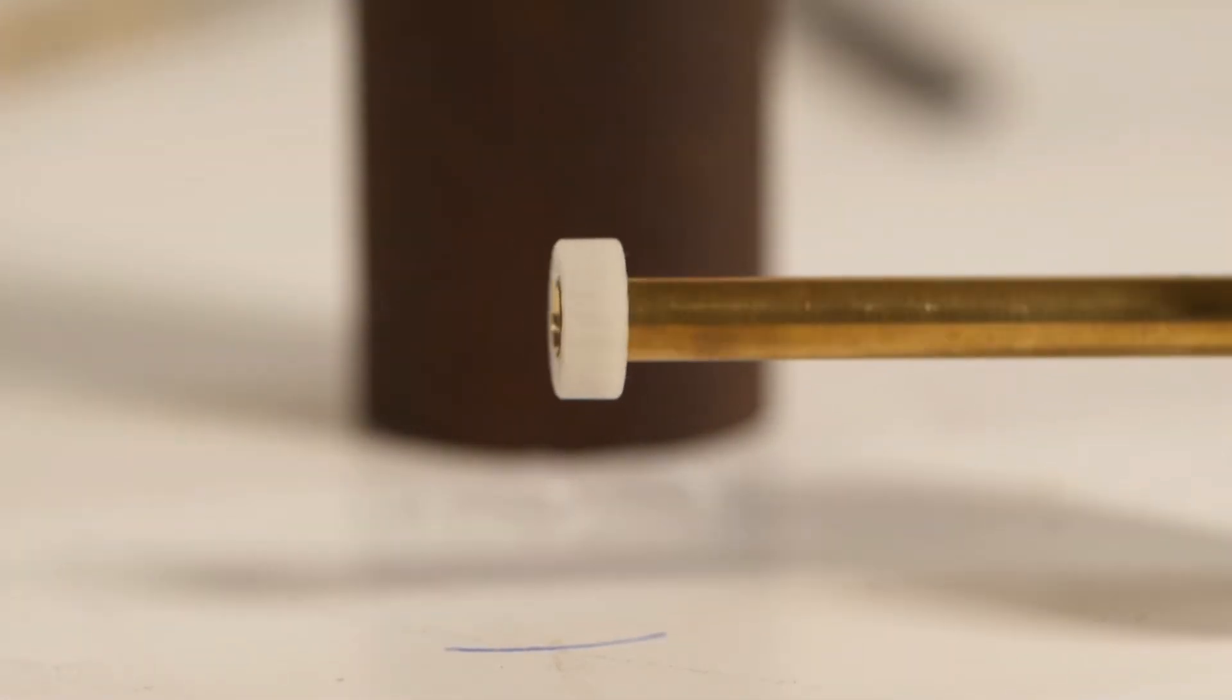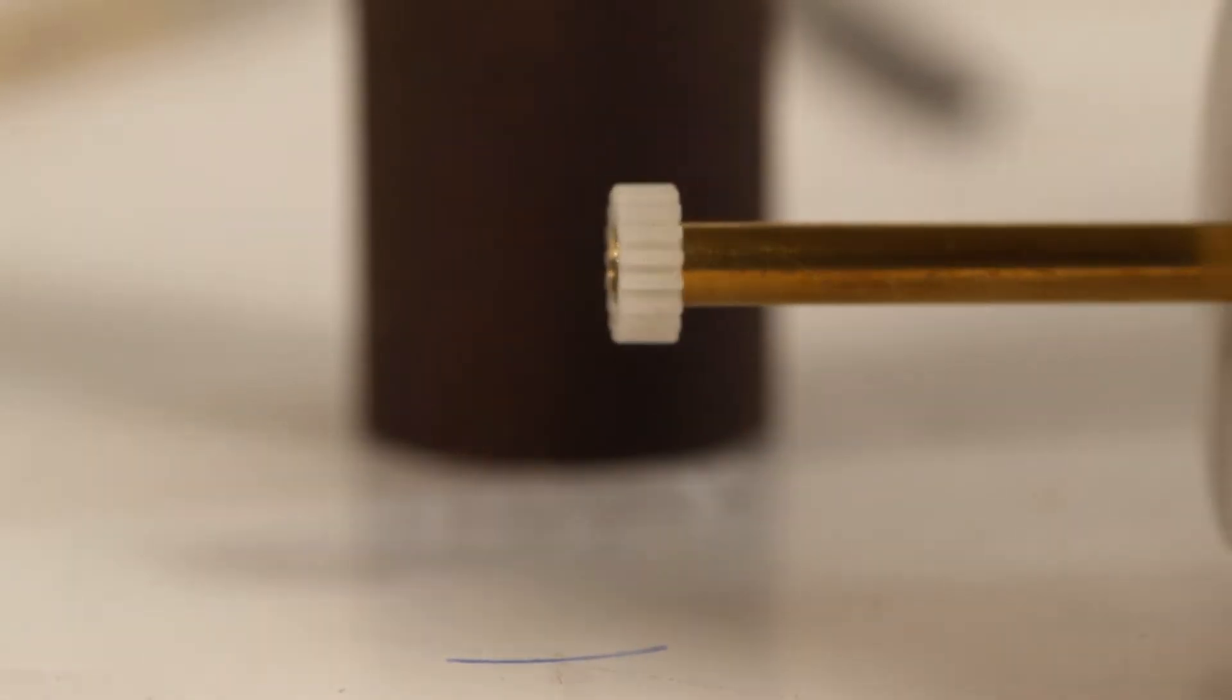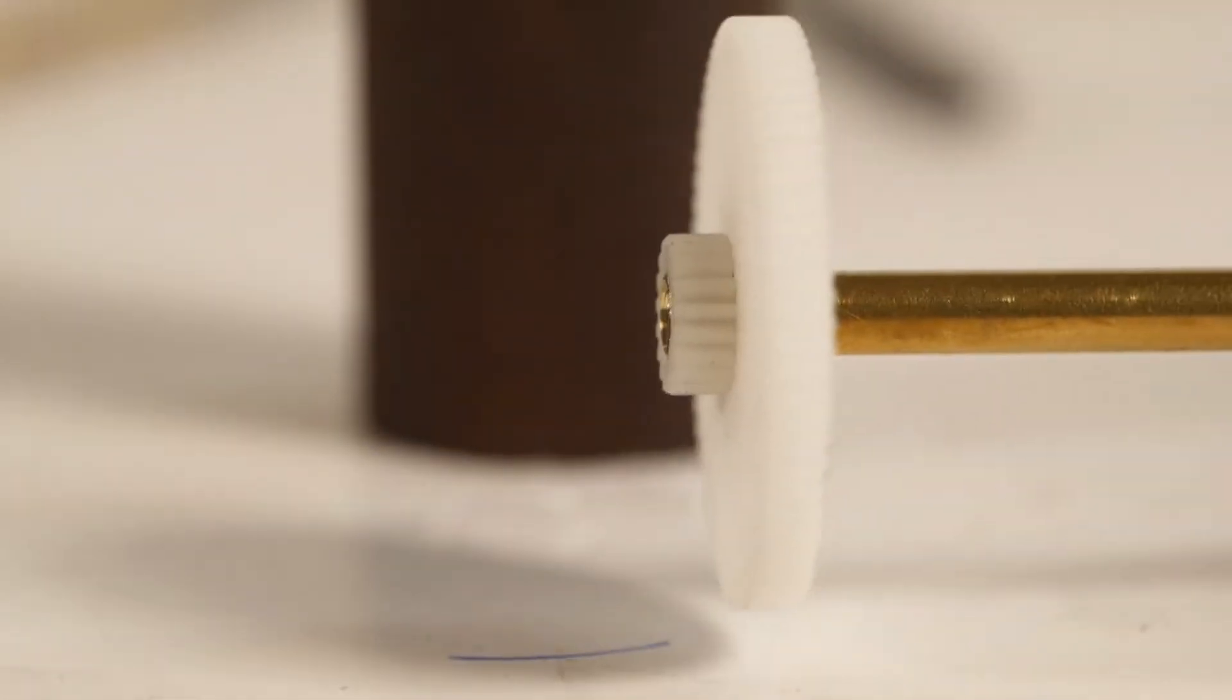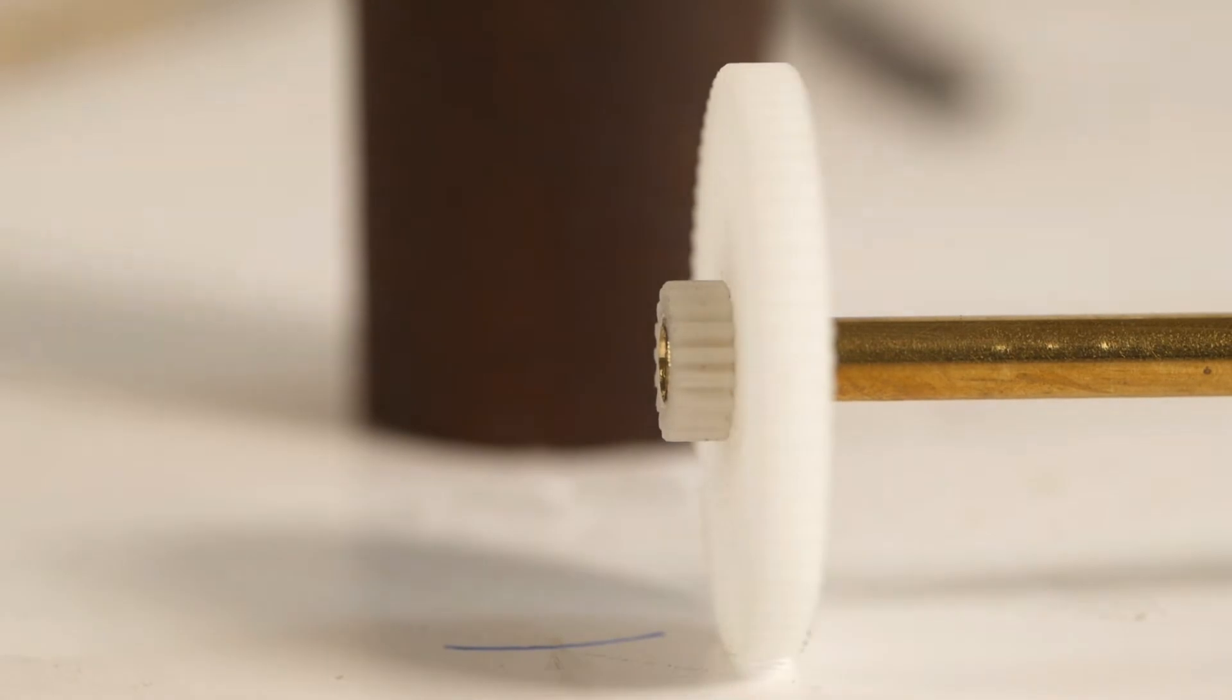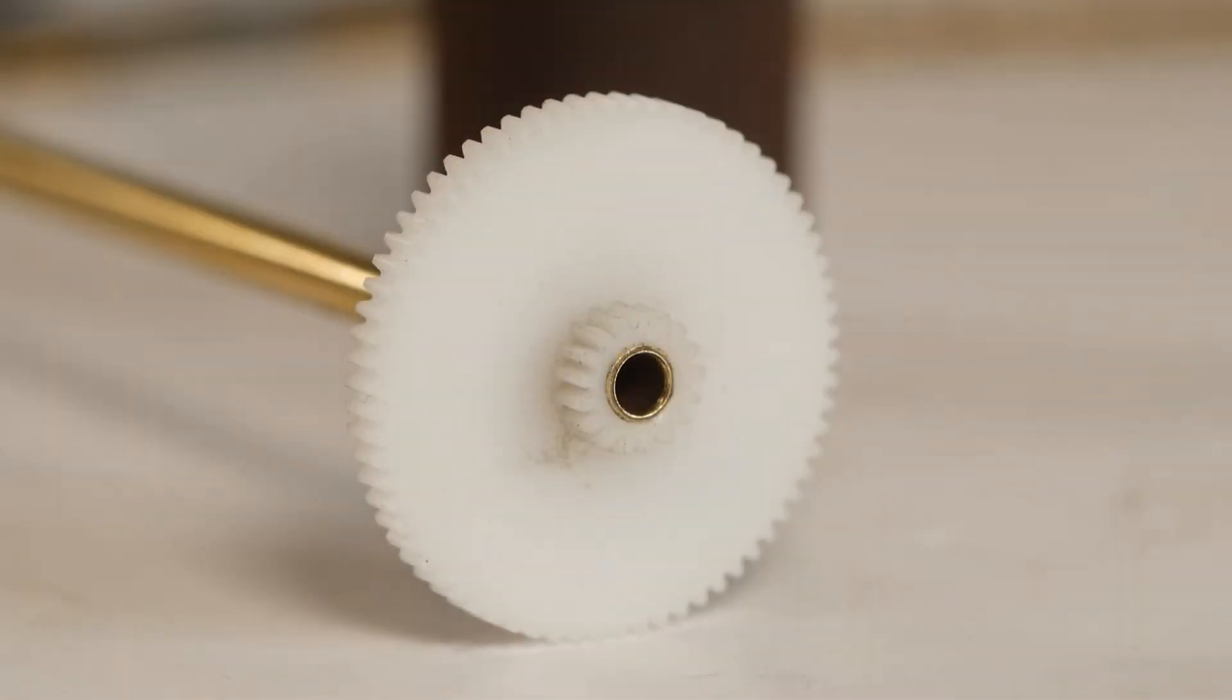And bingo! We have the small gear running nice and true on the brass tube. And I can slide the bigger gear up to it, so you get the idea of what the final product will look like. All I've got to do now is figure out what glue I'm going to use, glue the gears onto the tube, trim the tube to the length, and deburr the ends.